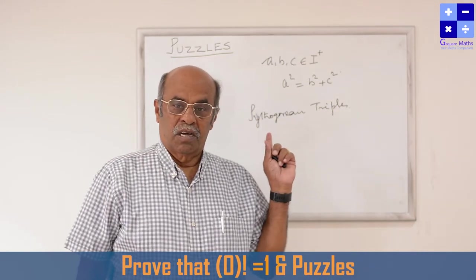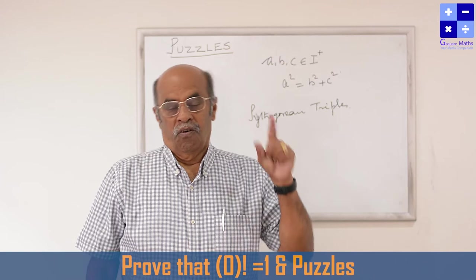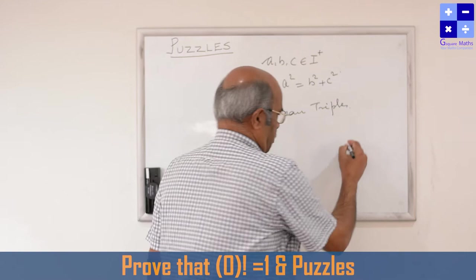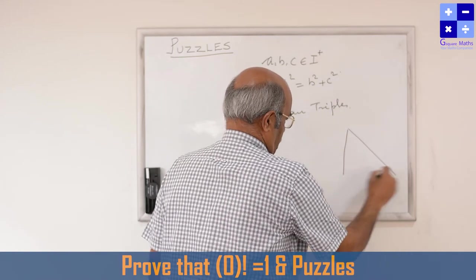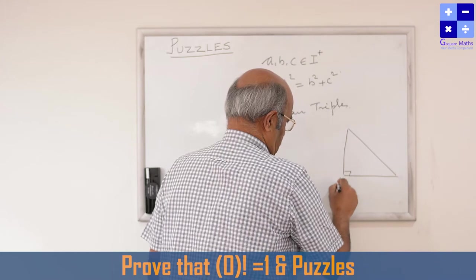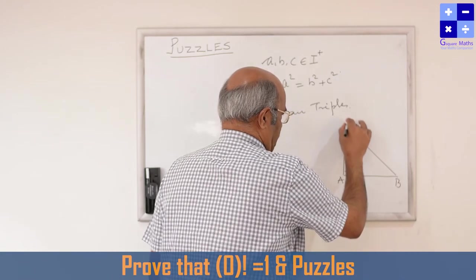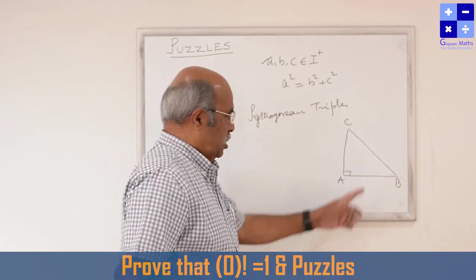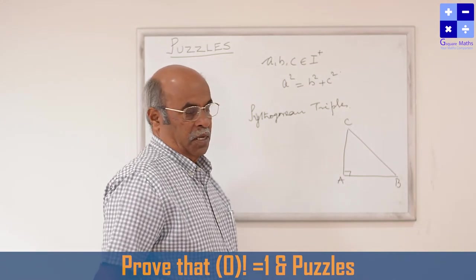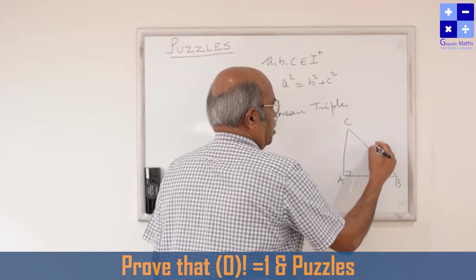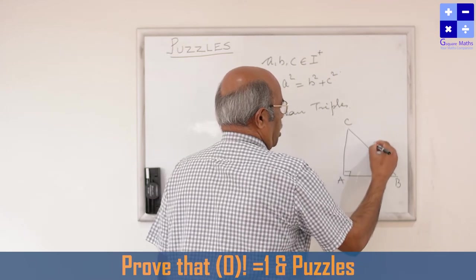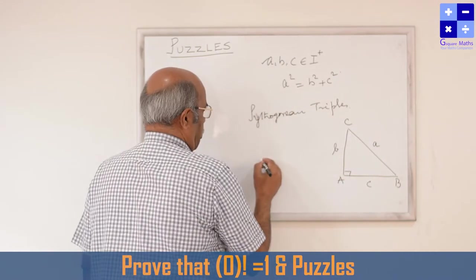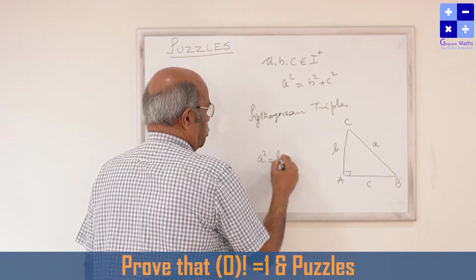This often confuses with Pythagoras theorem. What the Pythagoras theorem states: in a right angle triangle, the square of the hypotenuse is equal to the sum of the squares of the other two sides. Generally, we denote the sides opposite to vertices A, B, C as small a, small b, small c. So here, a² = b² + c².